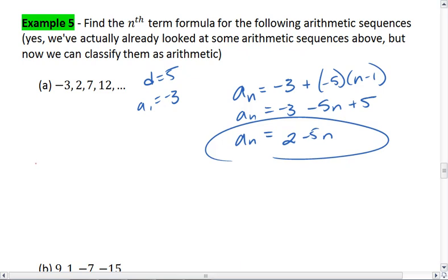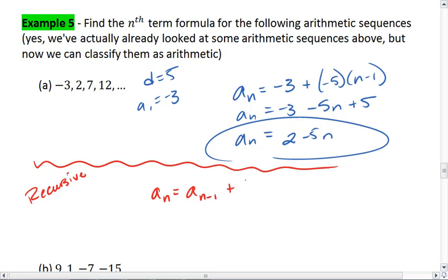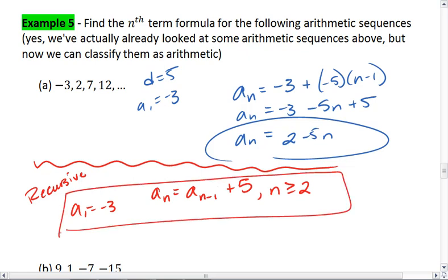If you wanted to, you could use a recursive formula. I could say that each term is determined by taking the previous term and adding 5 to it. This means that I have to give the first term, which is negative 3, and I have to say that this only works for term 2 and above, so for n is greater than or equal to 2. Both of these formulas will give you the same exact sequence.